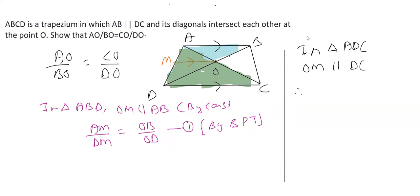Therefore, using BPT, I can write AM upon DM is equal to AO upon OC. Same reason here. This is equation 2.